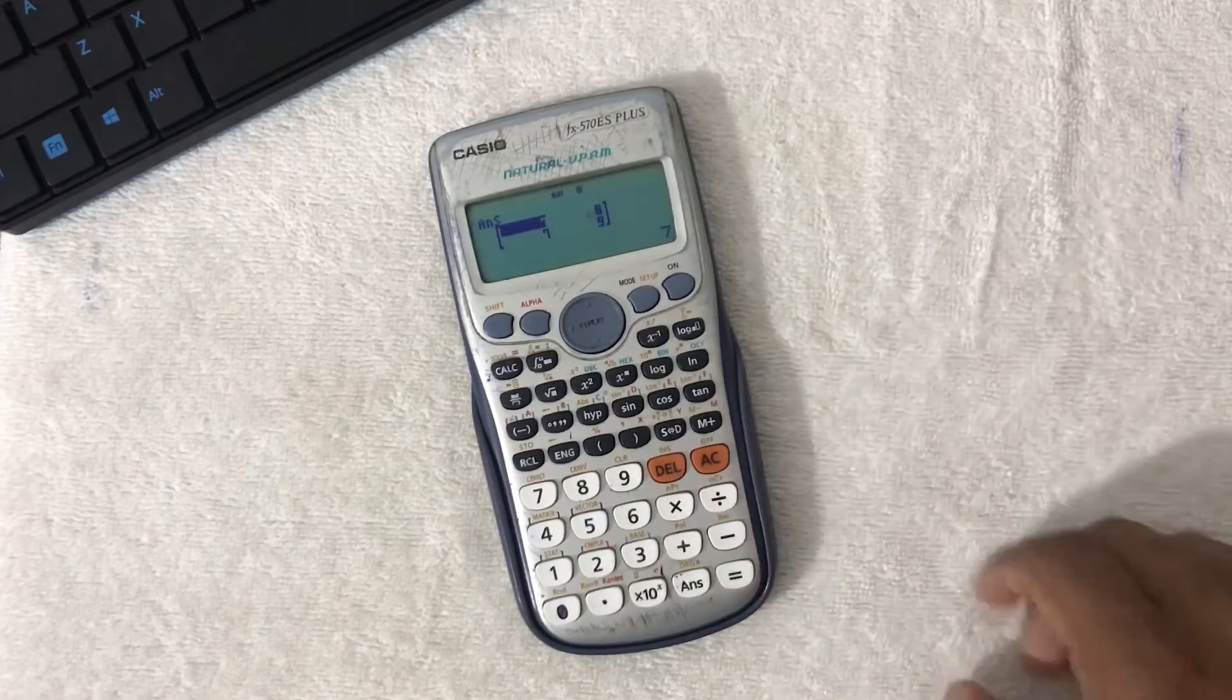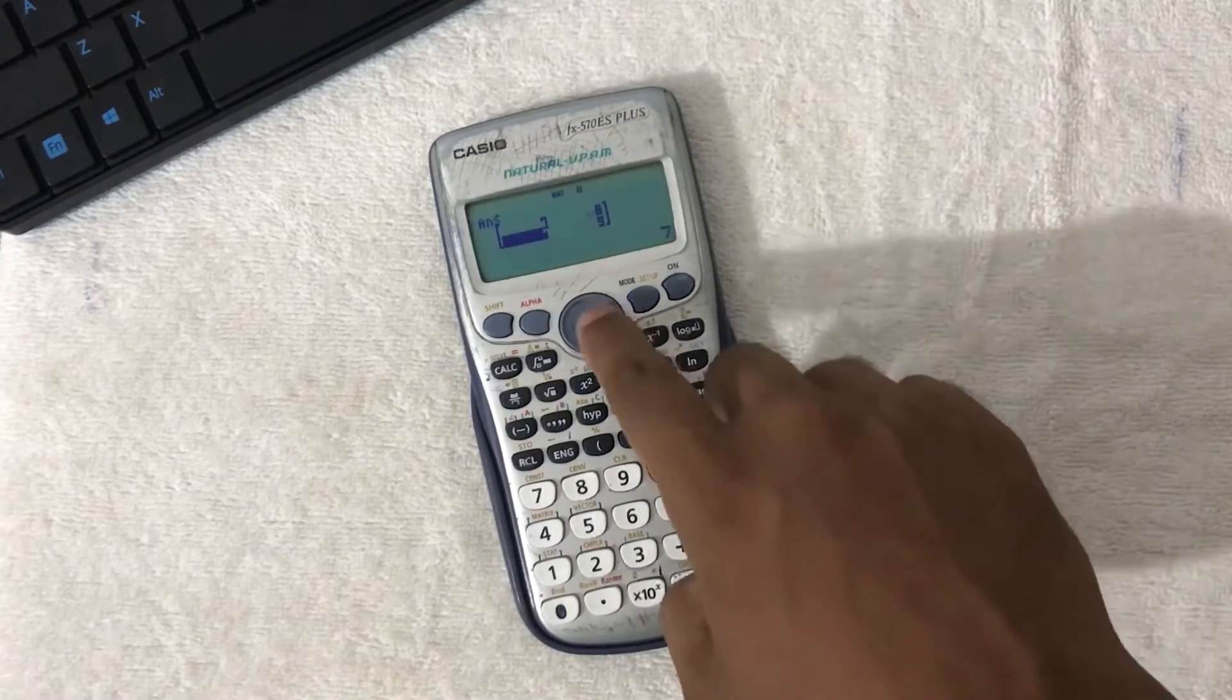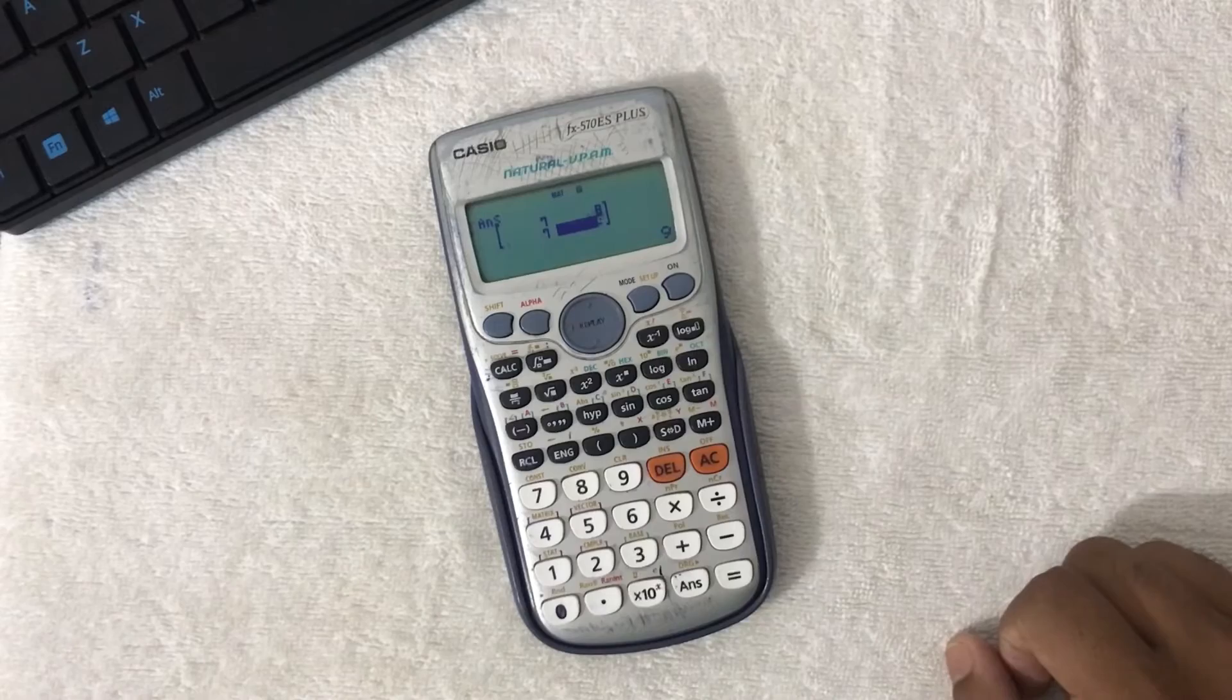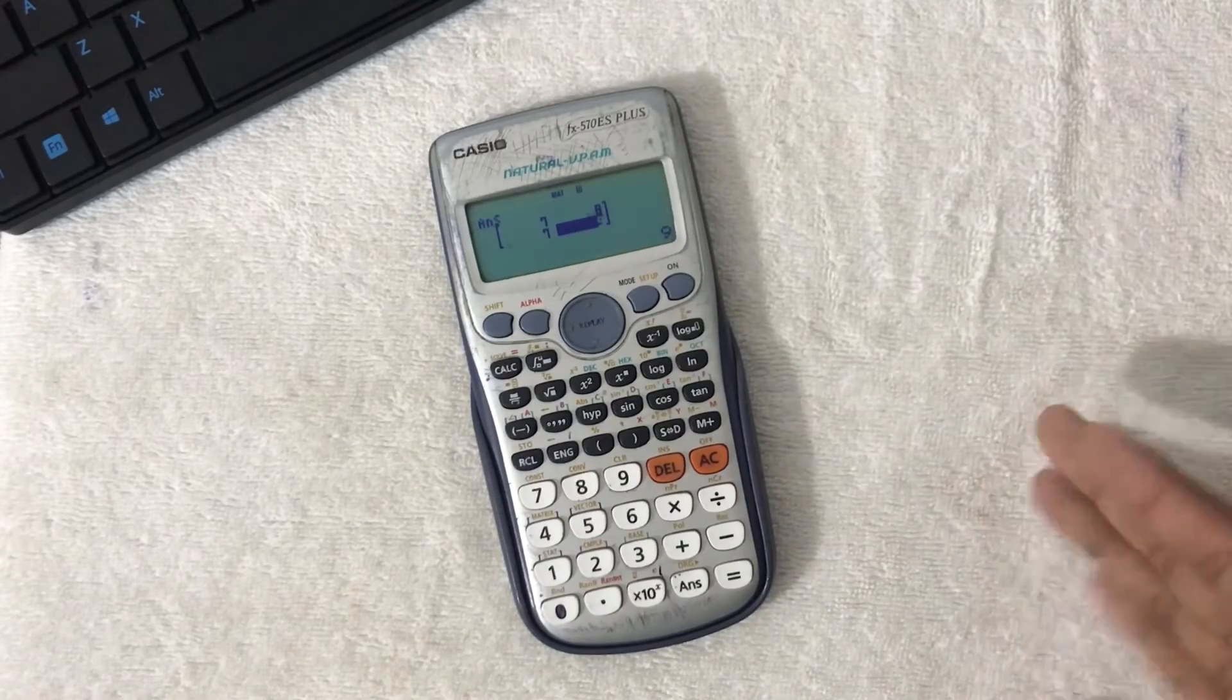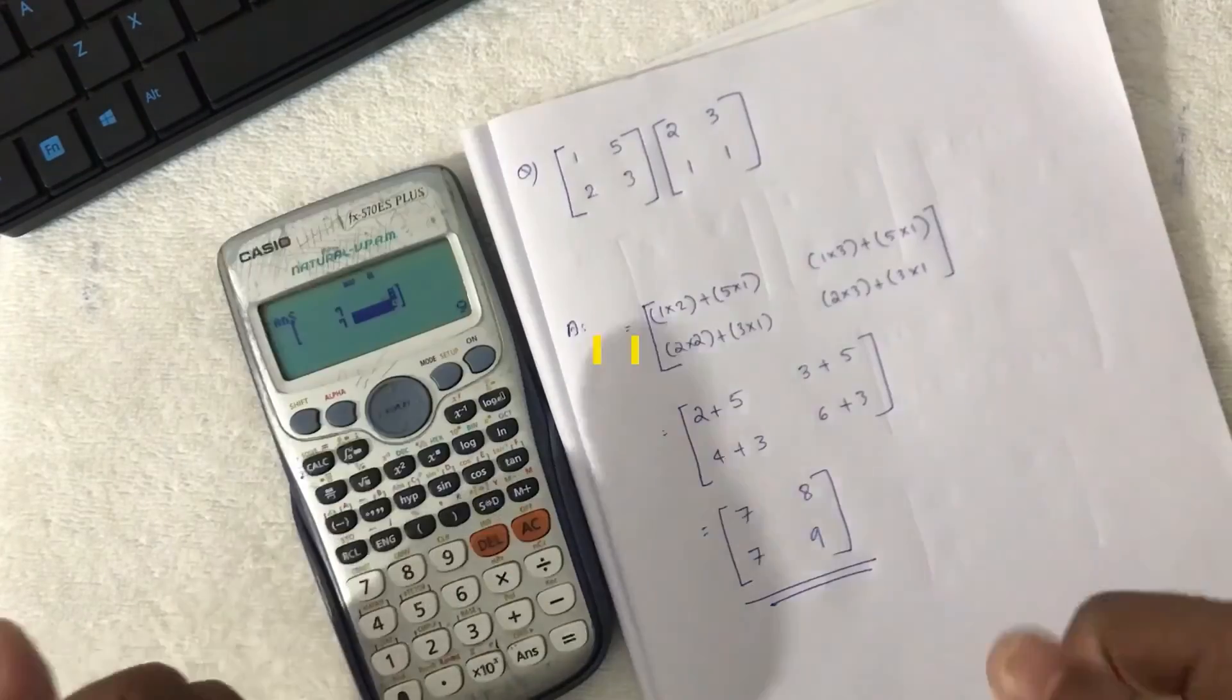Here will be the answers: 7, 8, 7, 9. In this way, you can multiply matrices using the Casio or similar calculators. Thanks for watching.